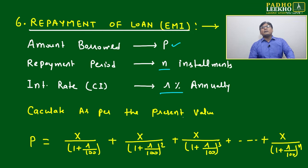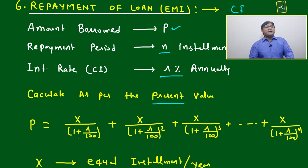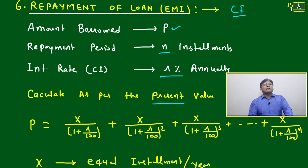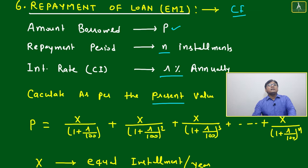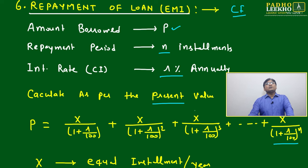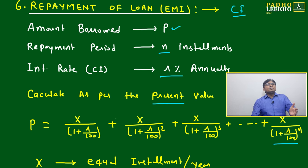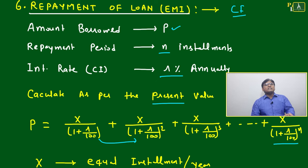We will calculate in the reverse way of normal calculation — using present value. We apply: P = x/(1 + r/100) + x/(1 + r/100)² + ... + x/(1 + r/100)^n. Adding all these amounts gives you the principal amount. After every installment, you are giving equal installment x, x, x.